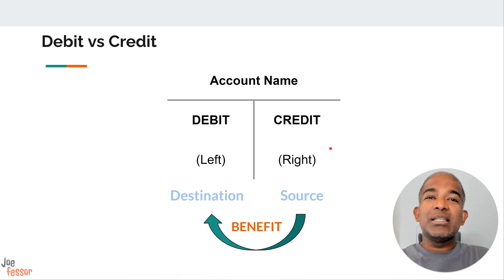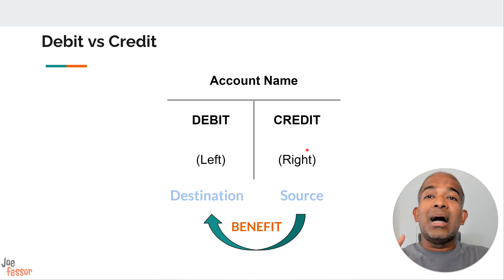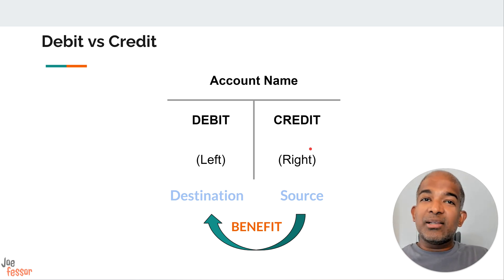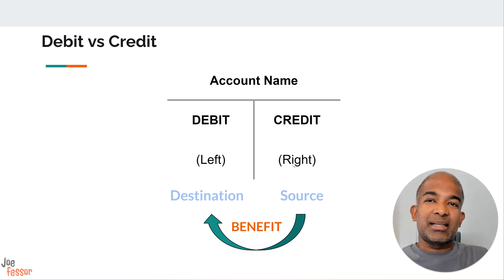Now let's tackle one of the most fundamental yet often misunderstood concepts in accounting — debits and credits. These two terms are the backbone of the double-entry bookkeeping system, which is how we record every financial transaction. At its core, the double-entry system is all about balance. Every transaction has two sides — something is given and something is received. Debits and credits are simply the way we represent these two sides. Think of it like a seesaw — to keep it balanced, every movement on one side needs an equal and opposite movement on the other side.